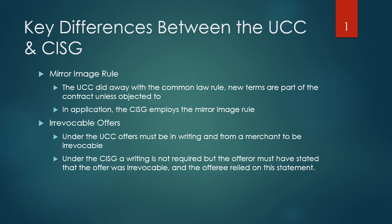I wanted to spend just a few moments talking about the differences between the UCC and the CISG. The UCC is the Uniform Commercial Code; the CISG is the Convention for the International Sale of Goods, which is a treaty published by the United Nations and which the United States is a signatory member.